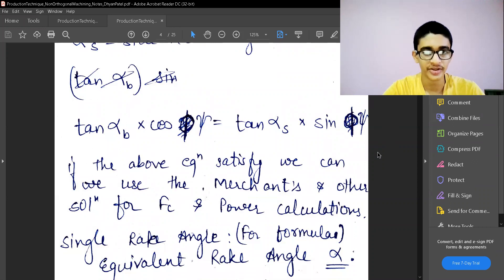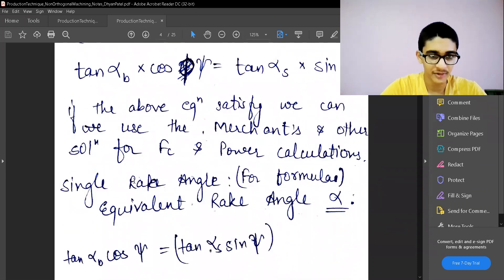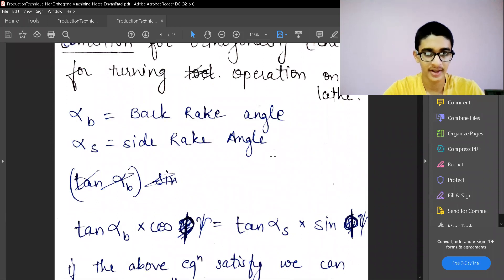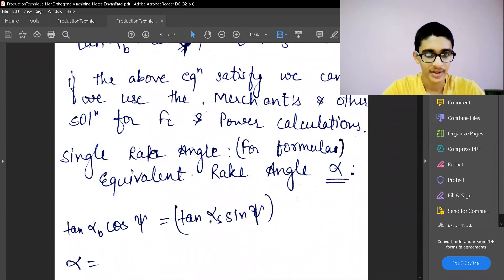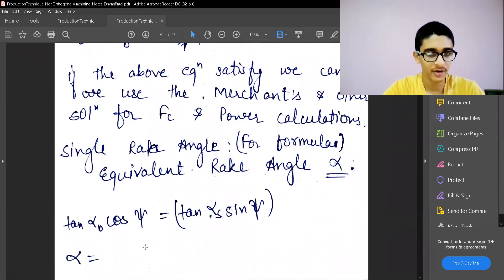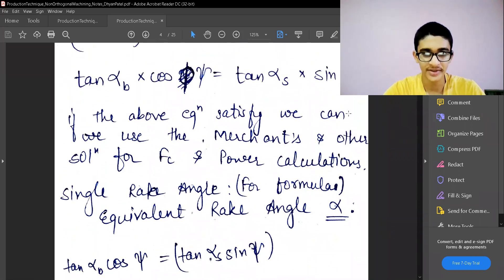We know the formulas already. This is one of the conditions for using those equations for turning operations specifically. We need to convert the two values - back rake angle and side rake angle - to a single equivalent rake angle alpha. That is a very long formula, so I'll directly mention that in the numerical question. But this is the condition: tan alpha_b cos psi equals tan alpha_s sin psi.